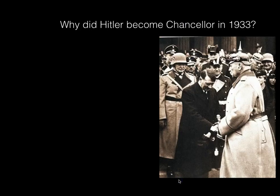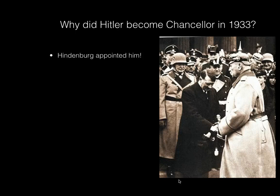So why did Hitler become Chancellor in January 1933? Hindenburg appointed him — we know from the Weimar Constitution that the President appoints the Chancellor, and they are supposed to appoint the leader of the biggest party, which Hitler had become. But Hindenburg actually actively avoided appointing Hitler for a while.